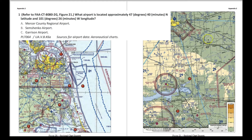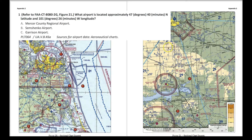Since this is 48 degrees and 49 is higher, if we come down 10 minutes, this is 47 degrees 50 minutes. Another 10 minutes down is 47 degrees 40 minutes — which is exactly what the question asks. That's our north latitude line. Now we need to find 100 degrees 26 minutes west longitude. Here's the 101-degree line, so we count over: 101, 10, 20, then 1, 2, 3, 4, 5, 6 additional minutes. Coming straight down, Garrison Airport is where we are.